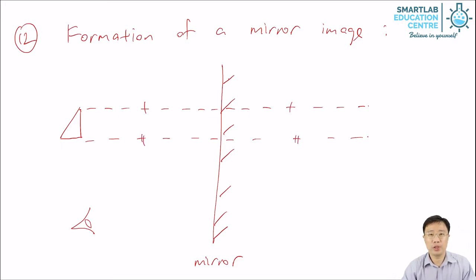Why do I draw these dotted lines? It's because of the third property of a mirror image which I stated just now. The object is as far in front of the mirror as the image is behind.